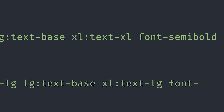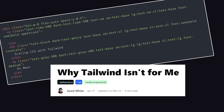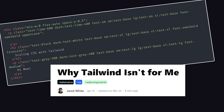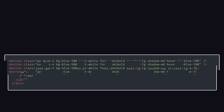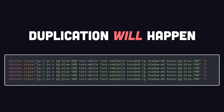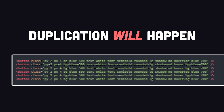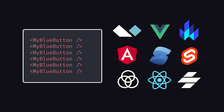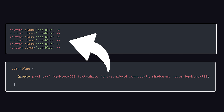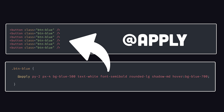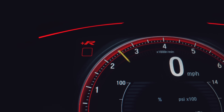However, it does produce some ugly-ass HTML. You've got tons of hard-to-read, duplicated class names. As your UI grows in complexity, code duplication is inevitable. But you can avoid it by creating reusable components with your favorite JavaScript framework, or by using the apply directive in CSS to take Tailwind classes and compose them into a single, concise class name.